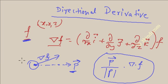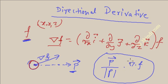To summarize the steps: first, identify the point; second, find del f; third, find the unit vector along p; and fourth, dot multiply those two vectors to get the directional derivative of the function.